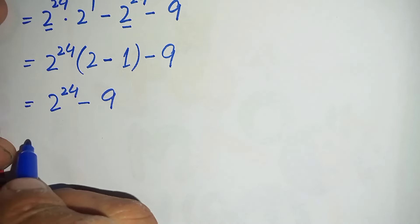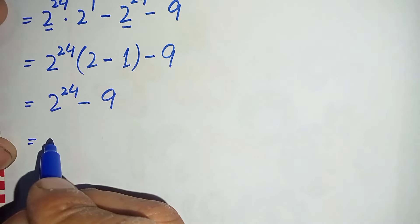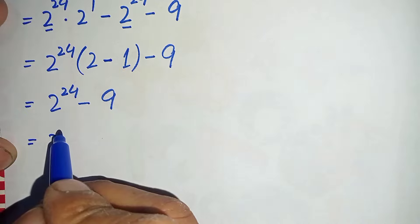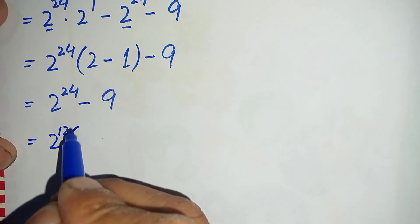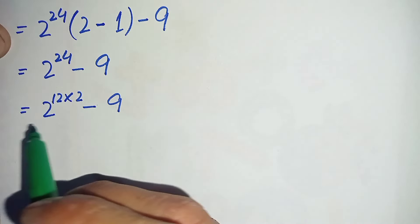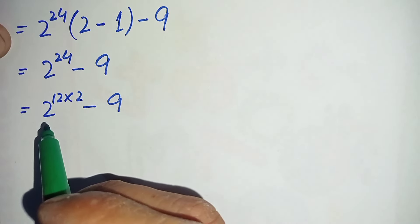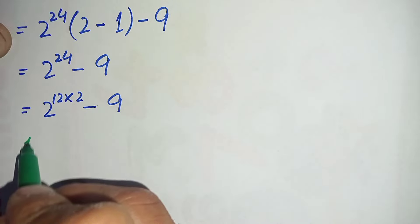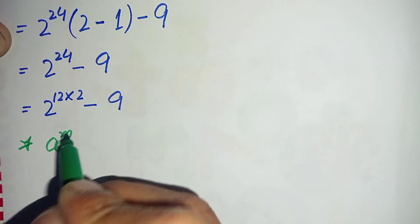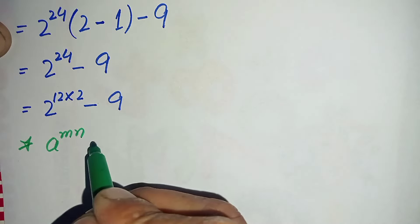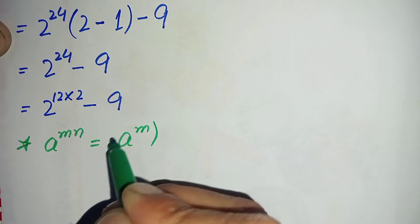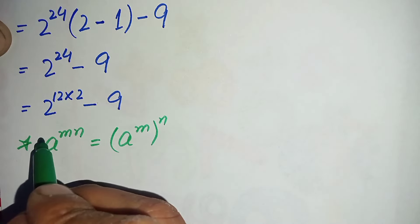Next, we will spread the power 24 using the factors 12 and 2. We can write 24 as 12 times 2, so the expression becomes 2 raised to power 12 times 2, minus 9. Now here in the first term we will use a famous exponential math property: a raised to power m times n can also be written as a raised to power m, all raised to power n.